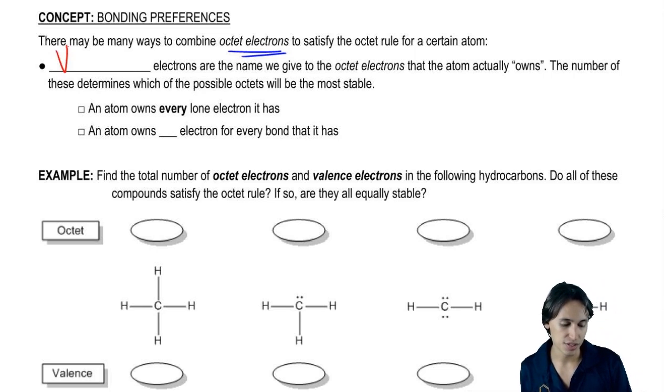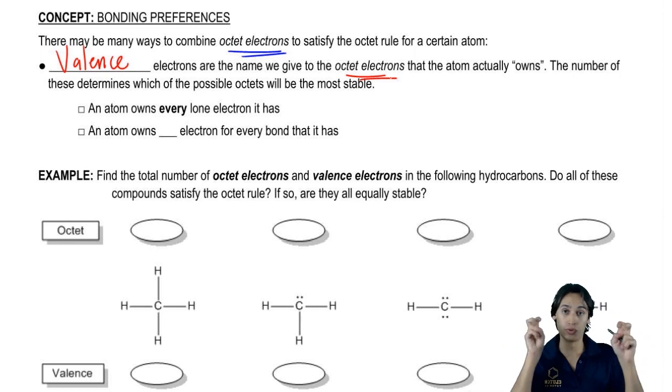And valence electrons, this is a new word, valence electrons are the names that we give to the octet electrons that the atom actually owns.